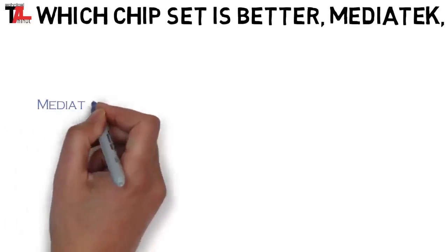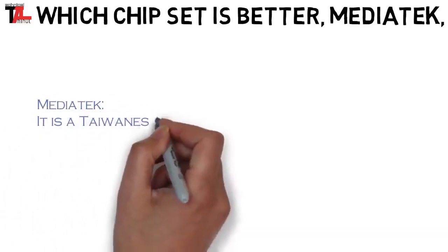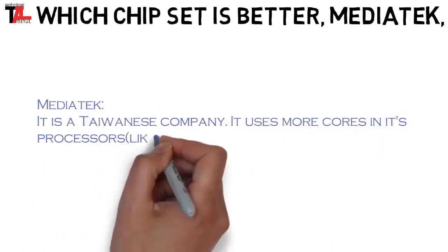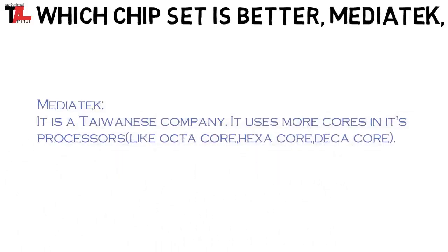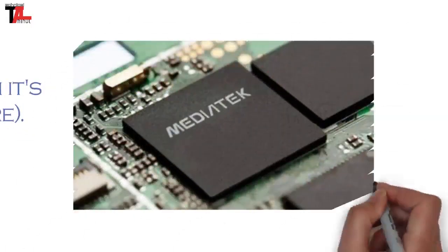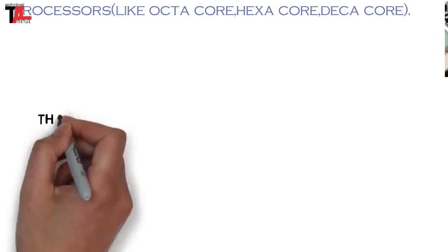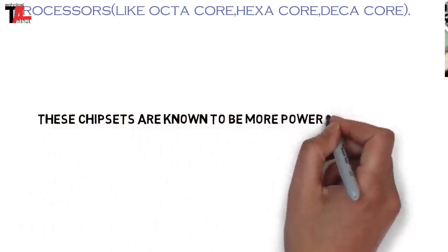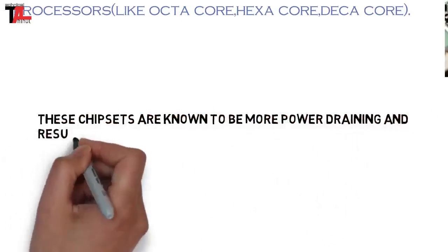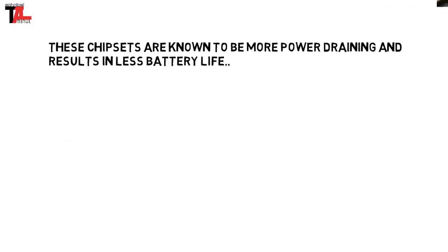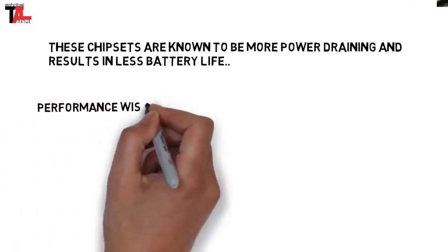The MediaTek chipset is from a Taiwanese company. It uses more cores in its processors, like octa-core, hexa-core, and deca-core. The MediaTek chipsets are known to be more power-draining and result in less battery life. They are optimizing their processors to be more power efficient, but still lag behind their competition in terms of battery life.